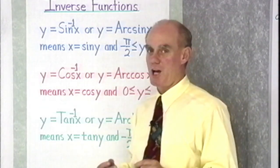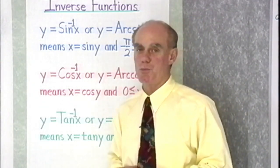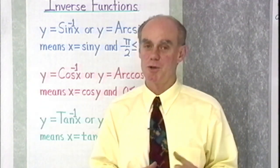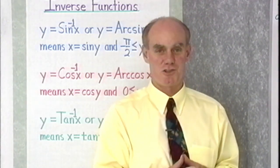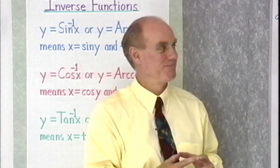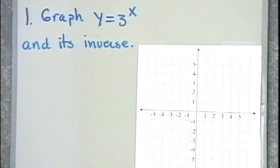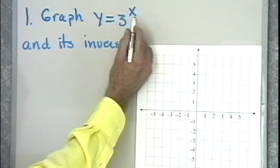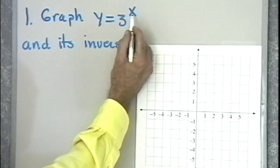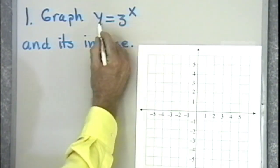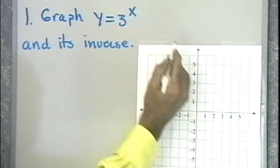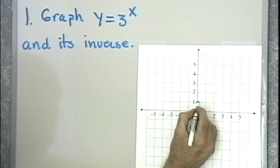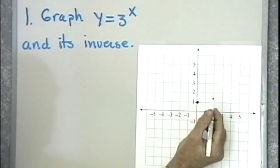What I want to do next is go to the board and work a problem that reviews a little bit about inverse functions from algebra. We want to graph y is equal to 3 to the x, and its inverse. First of all, let's graph y equal 3 to the x. I'll let x be equal to 0, then y is 3 to the 0, which is 1. So I get this point.